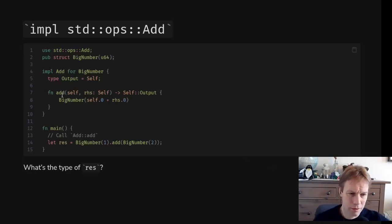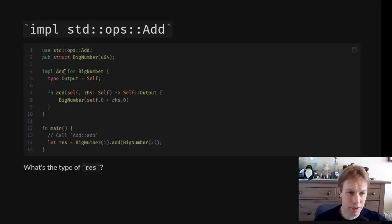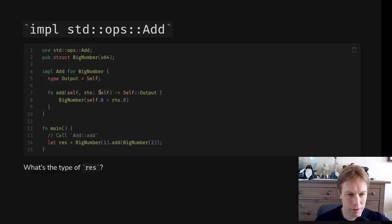res is the return value from add. Add returns Output; Output is Self; Self is BigNumber, so the type of res is BigNumber. Why didn't we have to say Add<BigNumber> here? Because of that default — Rhs equals Self — so impl Add for BigNumber is actually saying impl Add<BigNumber> for BigNumber. If we'd said Add<u32> then Rhs would be u32 instead, and we'd be talking about how to add a BigNumber to a u32.